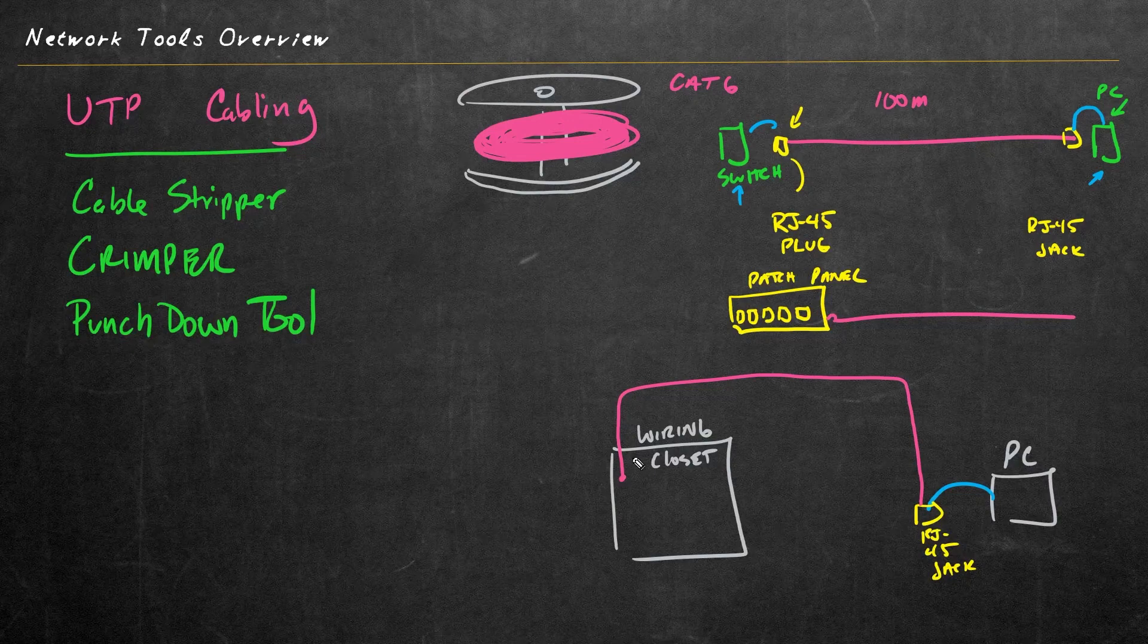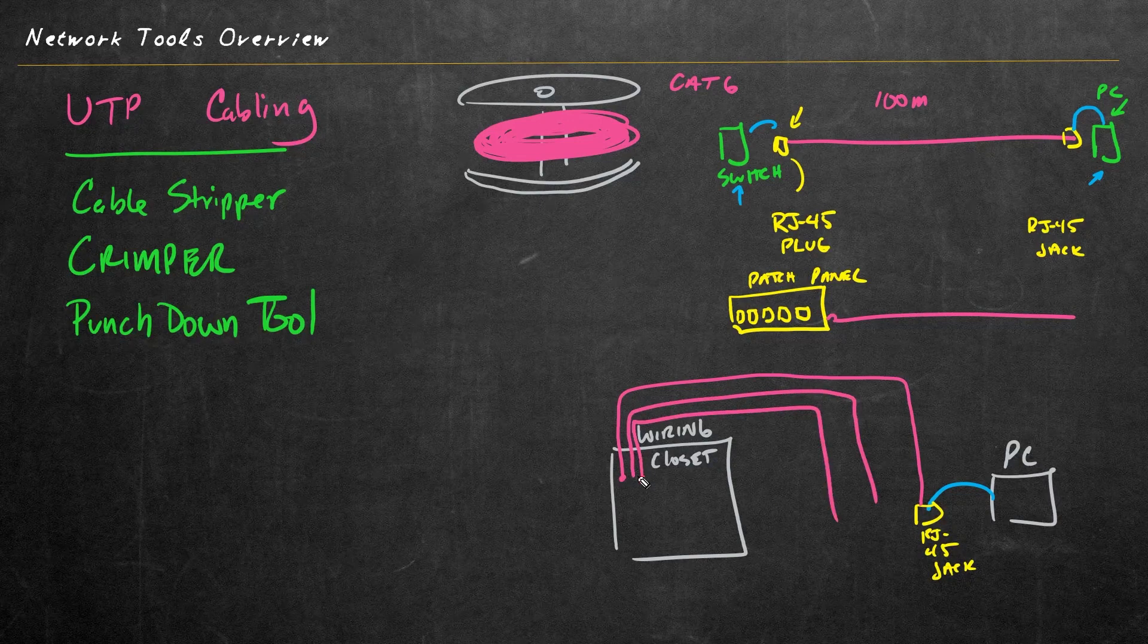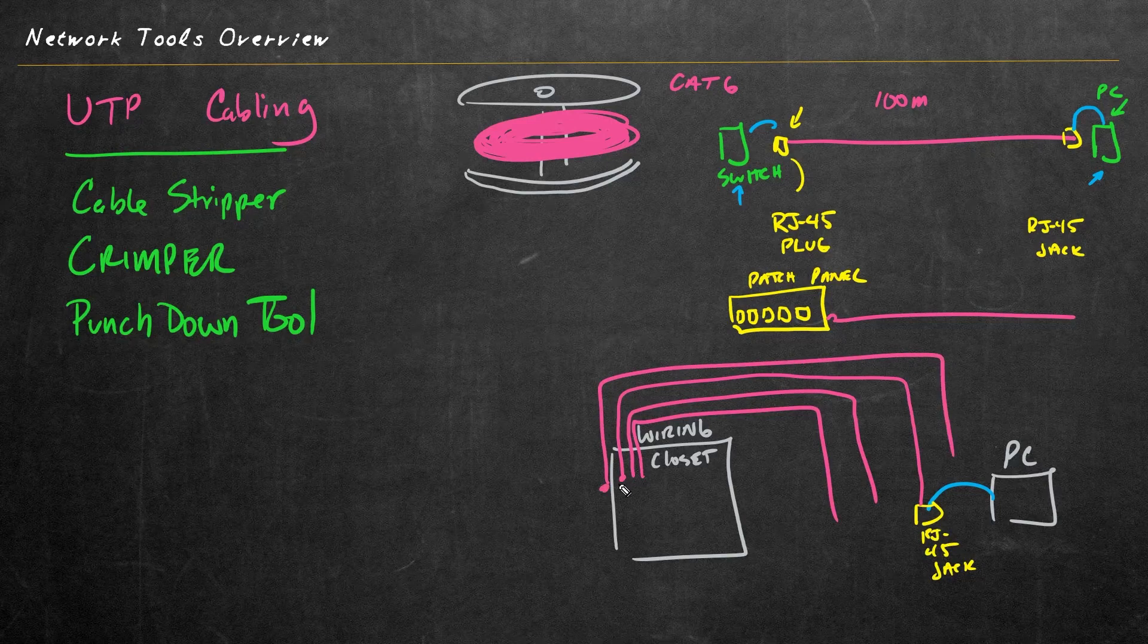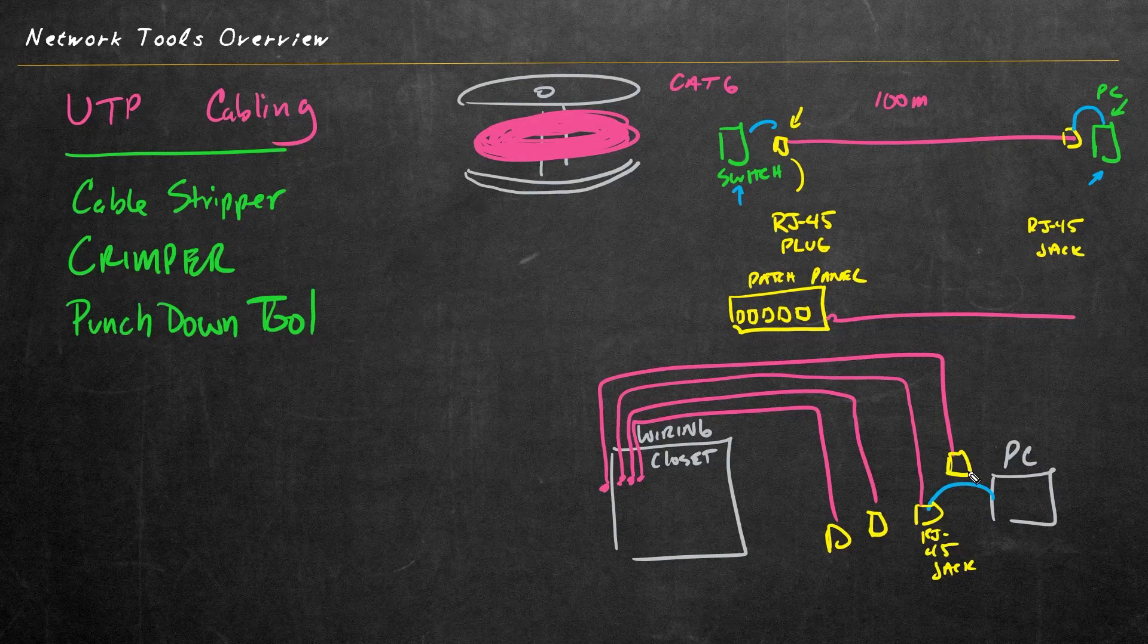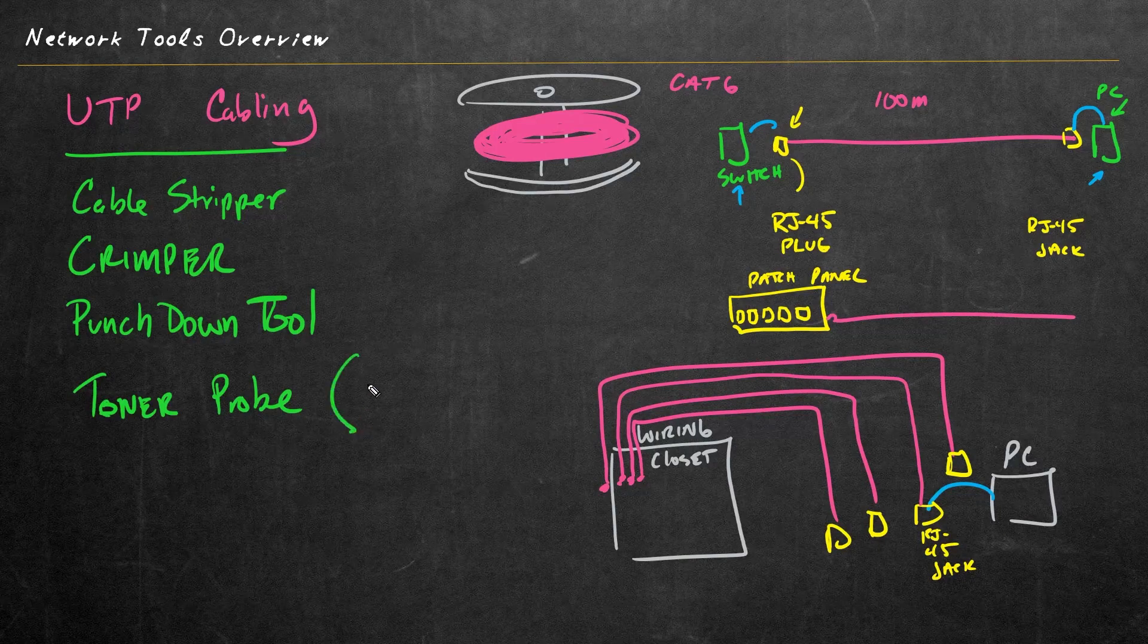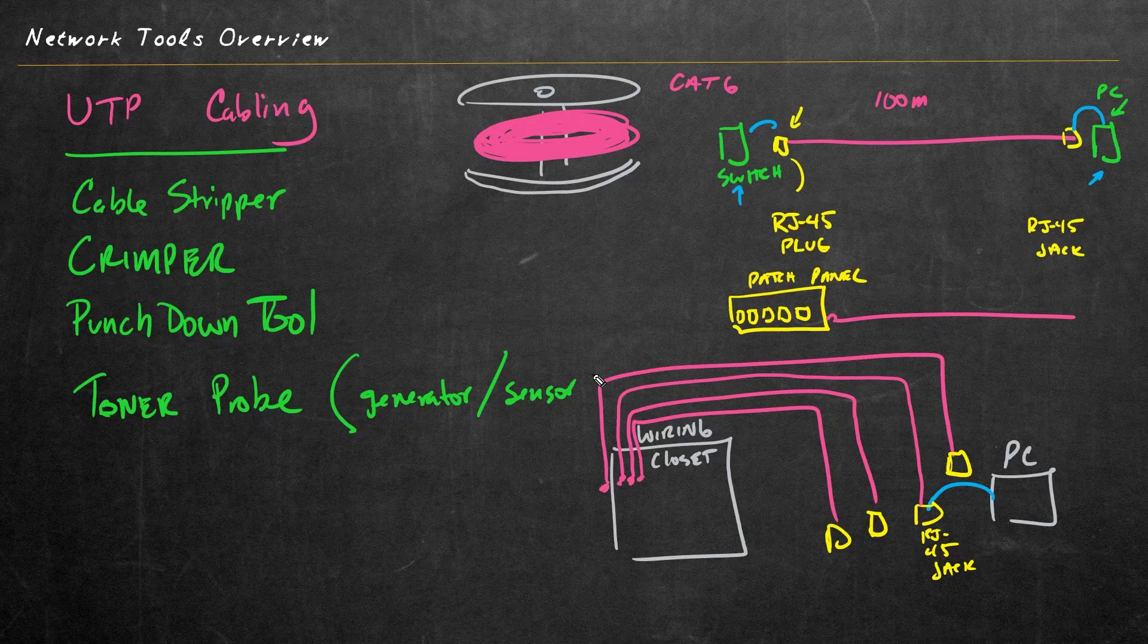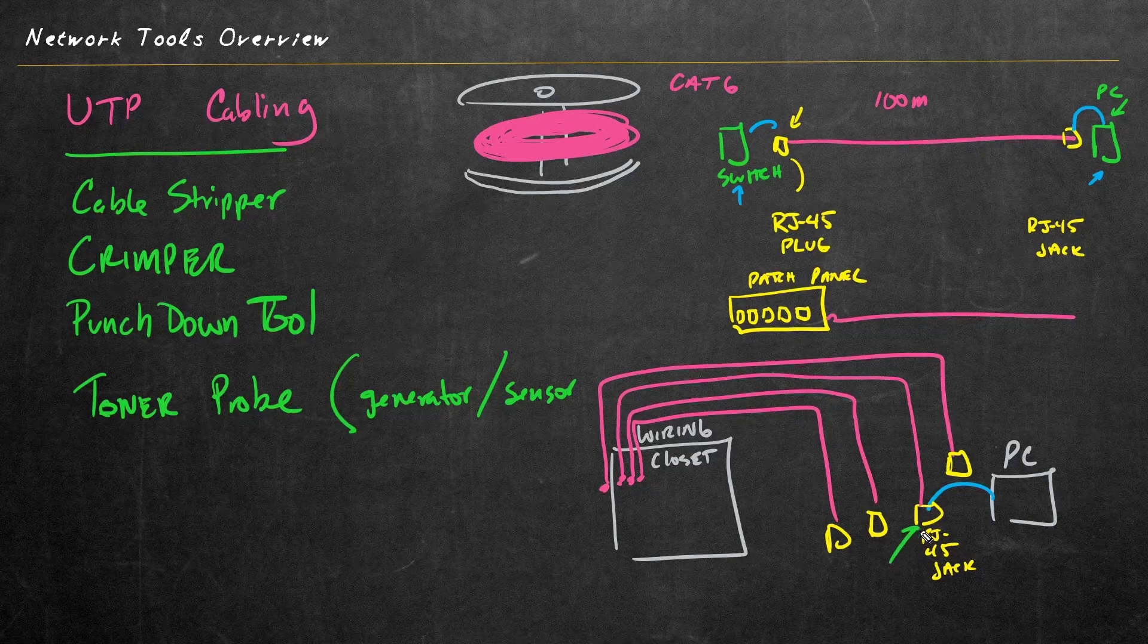However, sometimes it's not. So in a situation where we have lots of cables that are going out, how in the world do we verify which cable here in the wiring closet goes out to which jack out here on the floor? And the answer to that is a tool that can help us find that, and that would be a toner probe. And a toner probe has two parts. It's got a tone generator and it also has a sensor. So what we could do is we could take the tone generator and we could plug it in, for example, right here on this port.